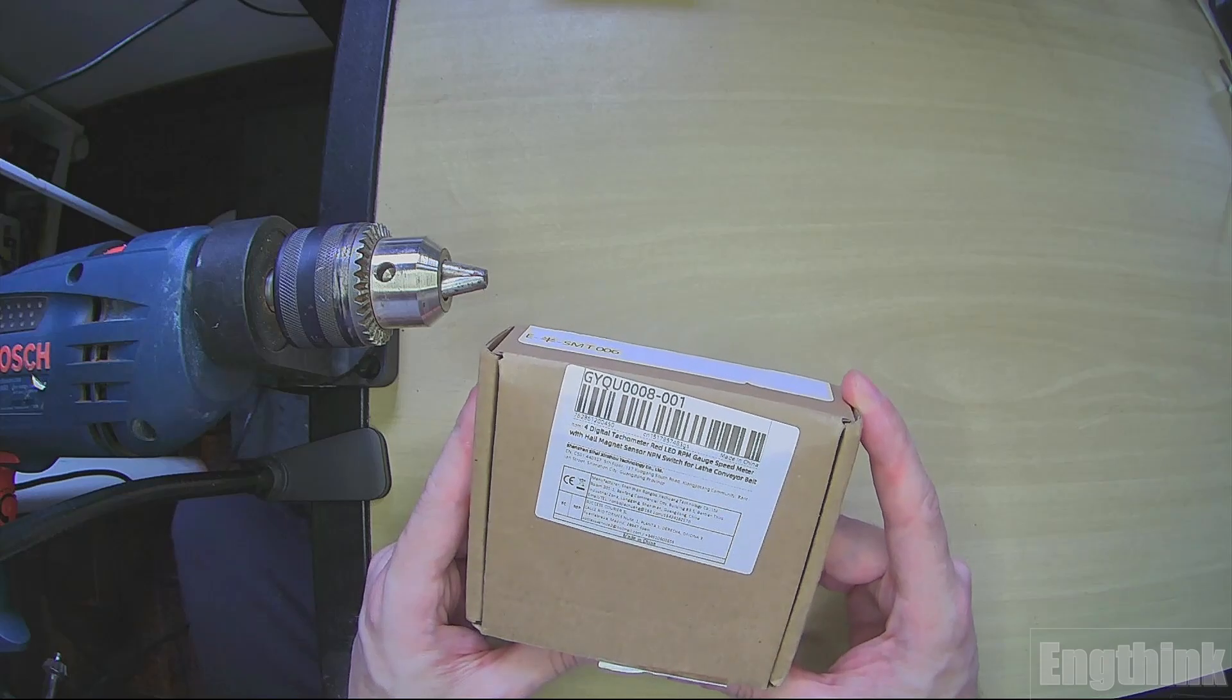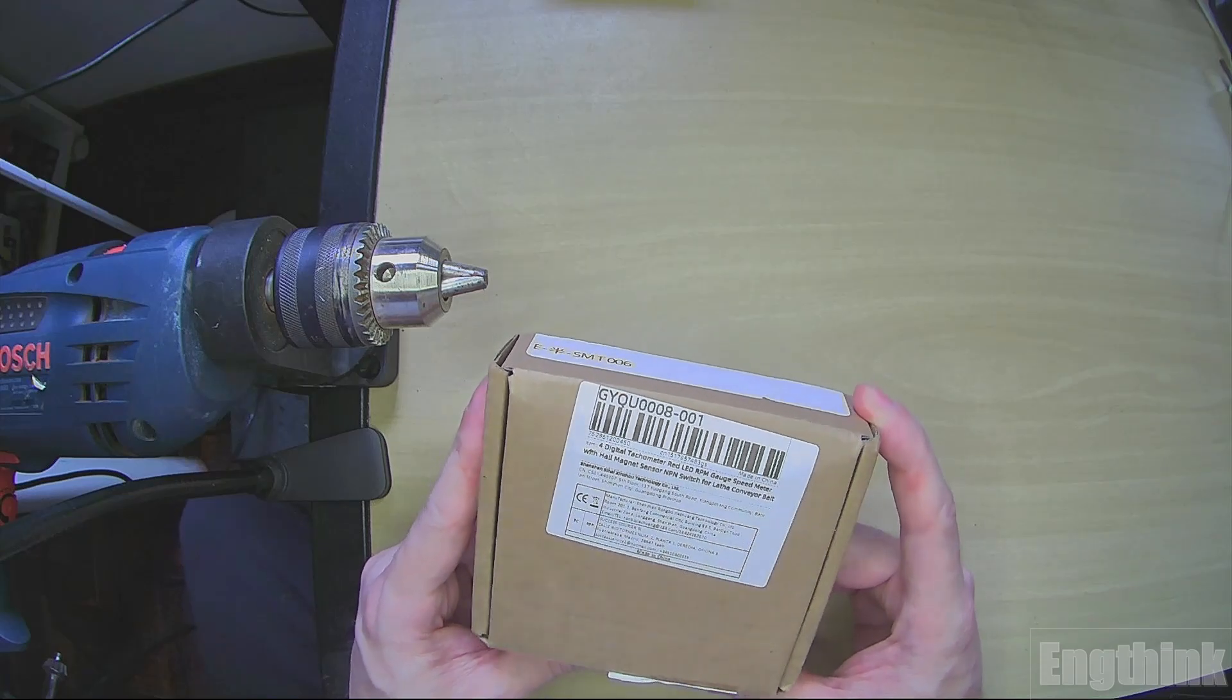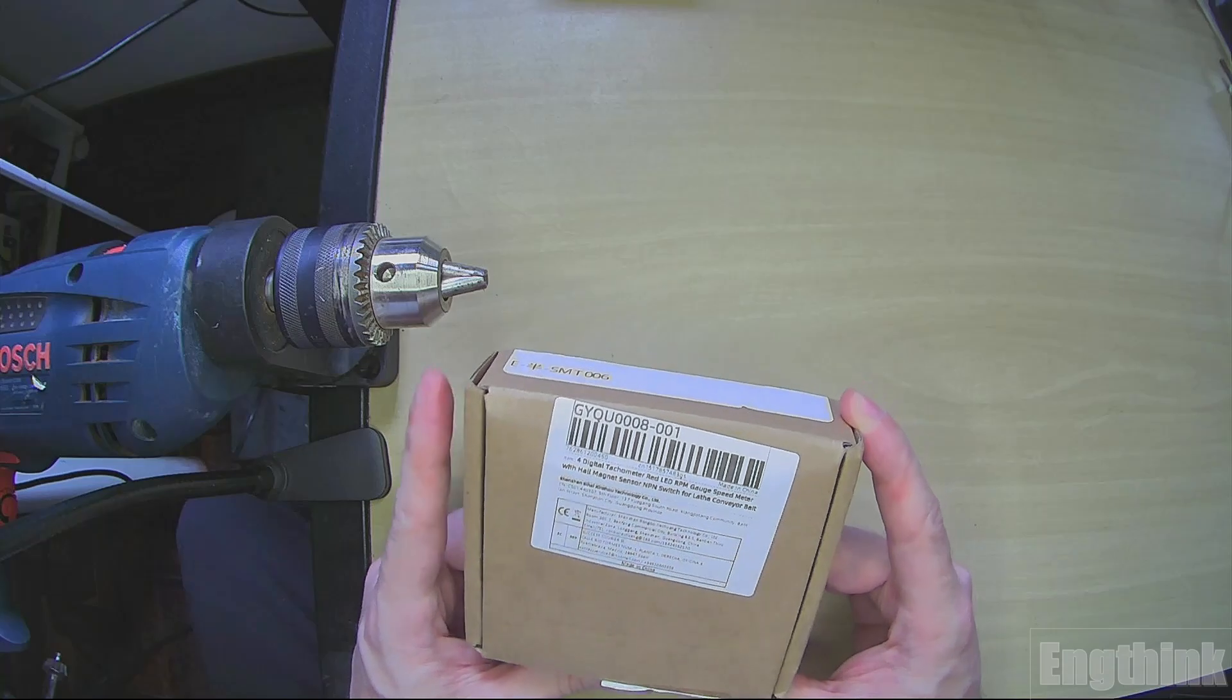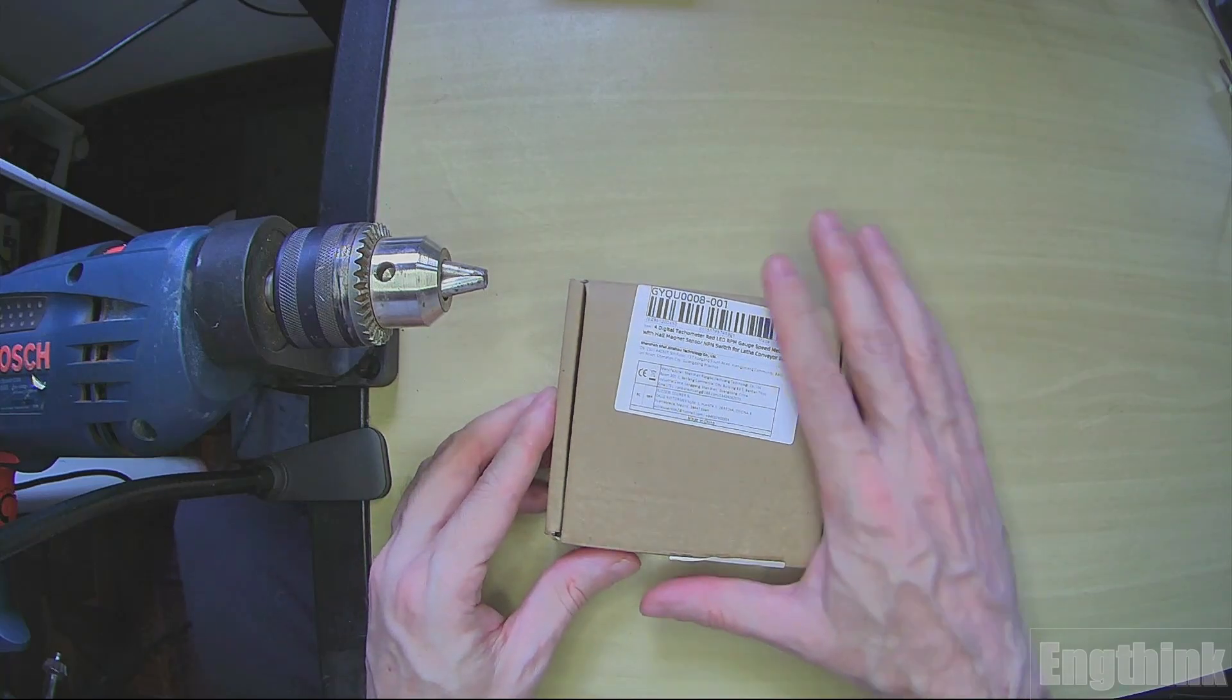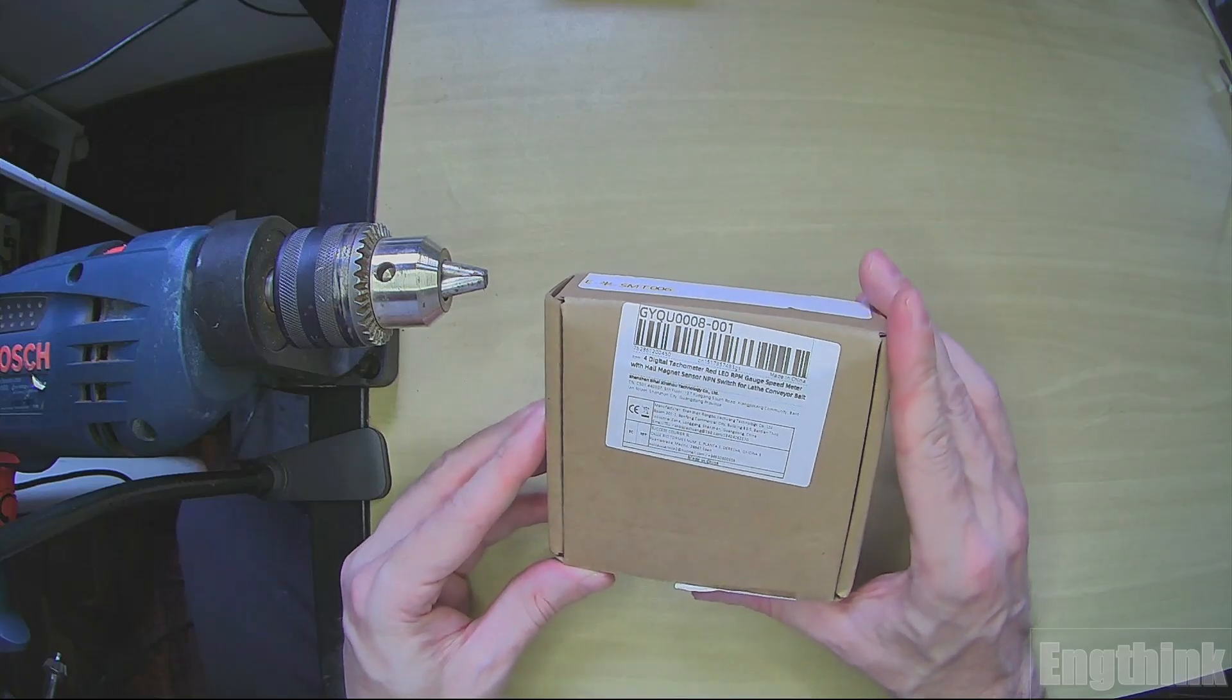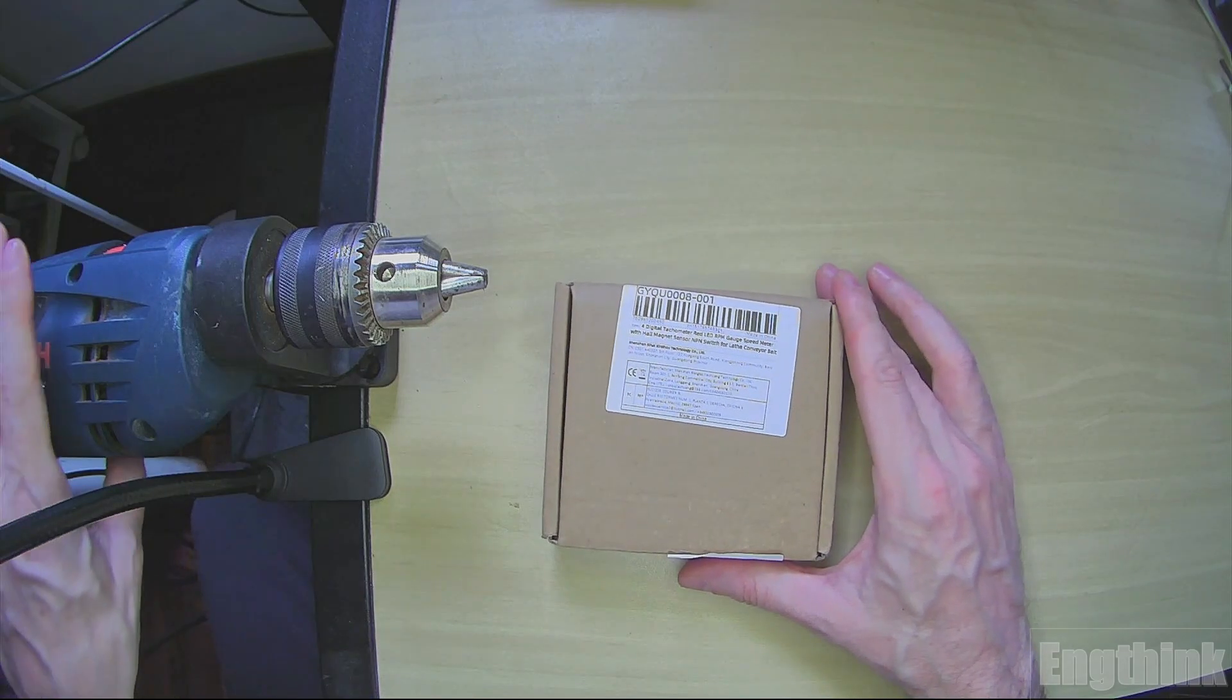A tachometer is an instrument that measures the rotation speed of a shaft or disk. So in this case I will demonstrate this RPM gauge speed meter with this drilling machine.